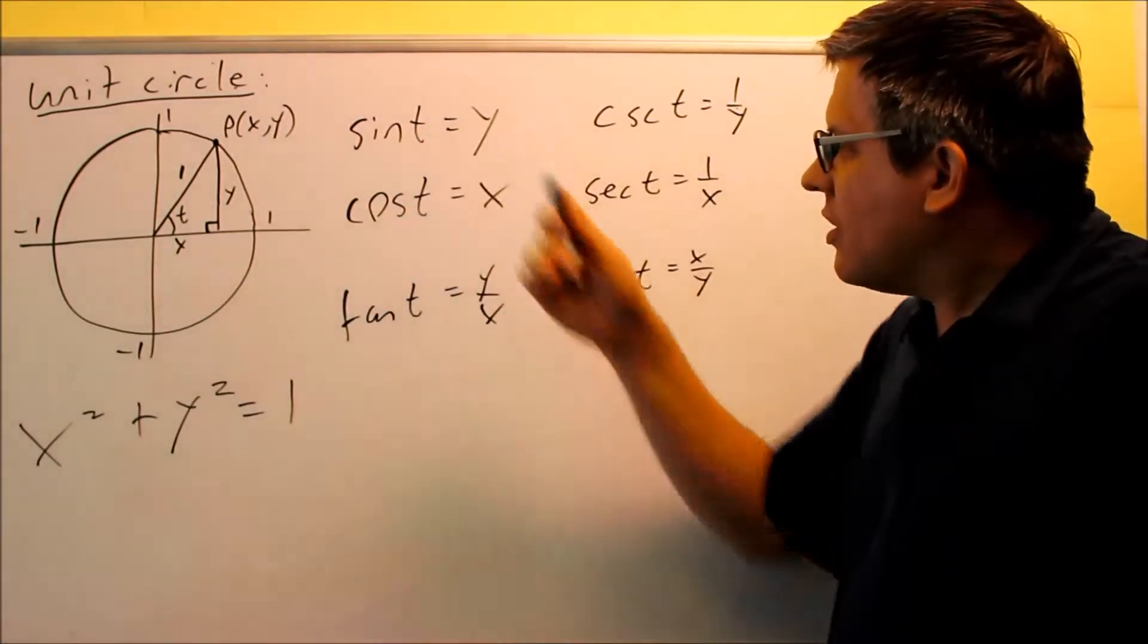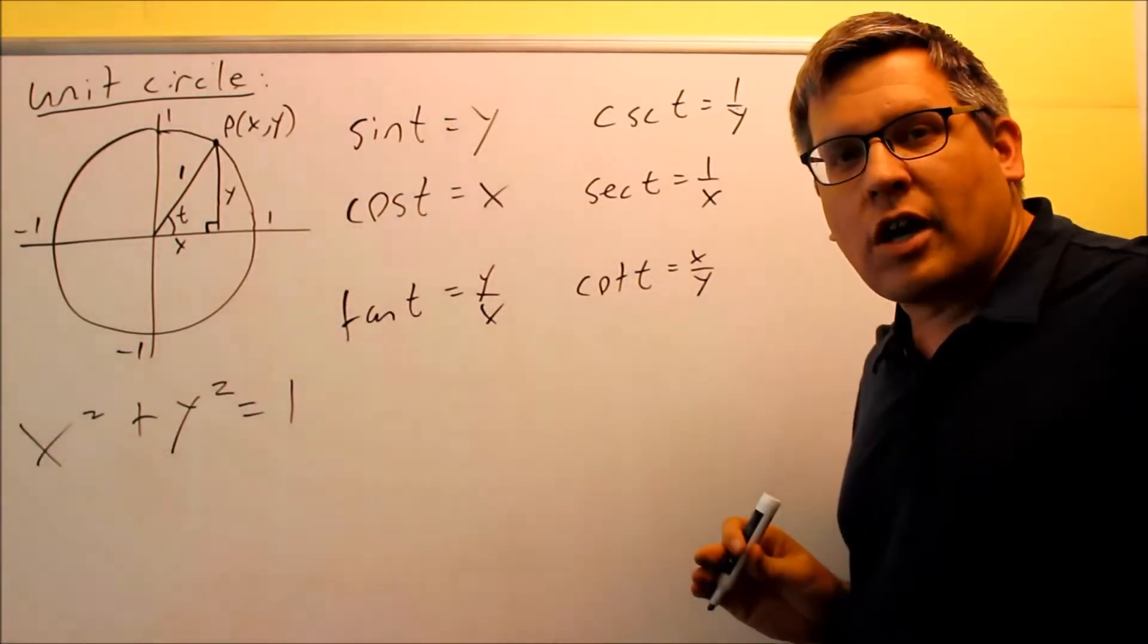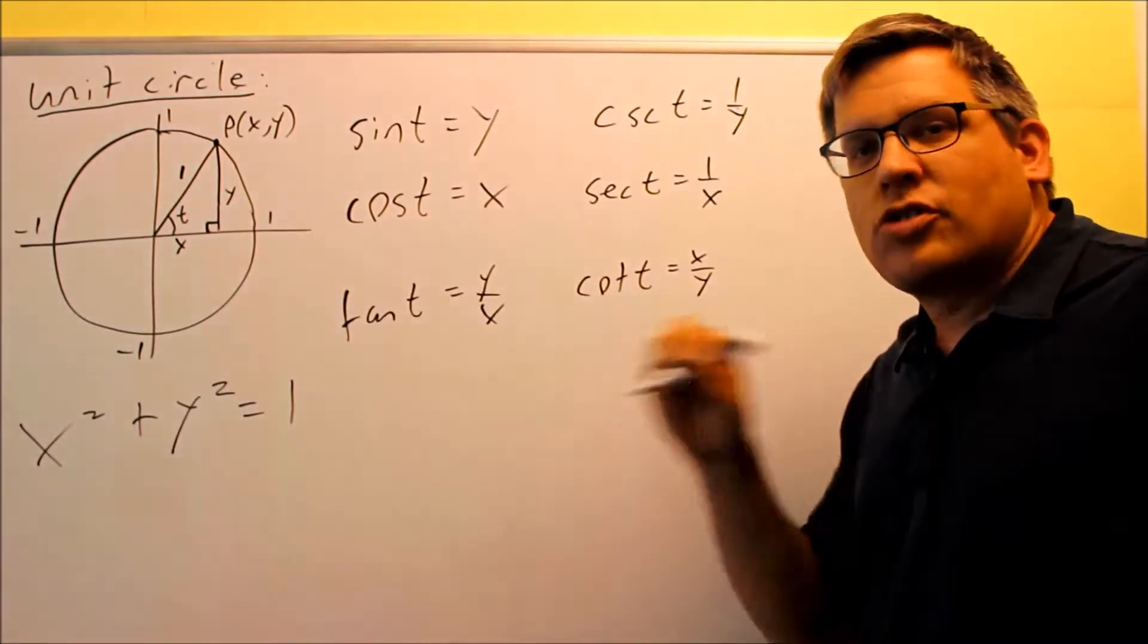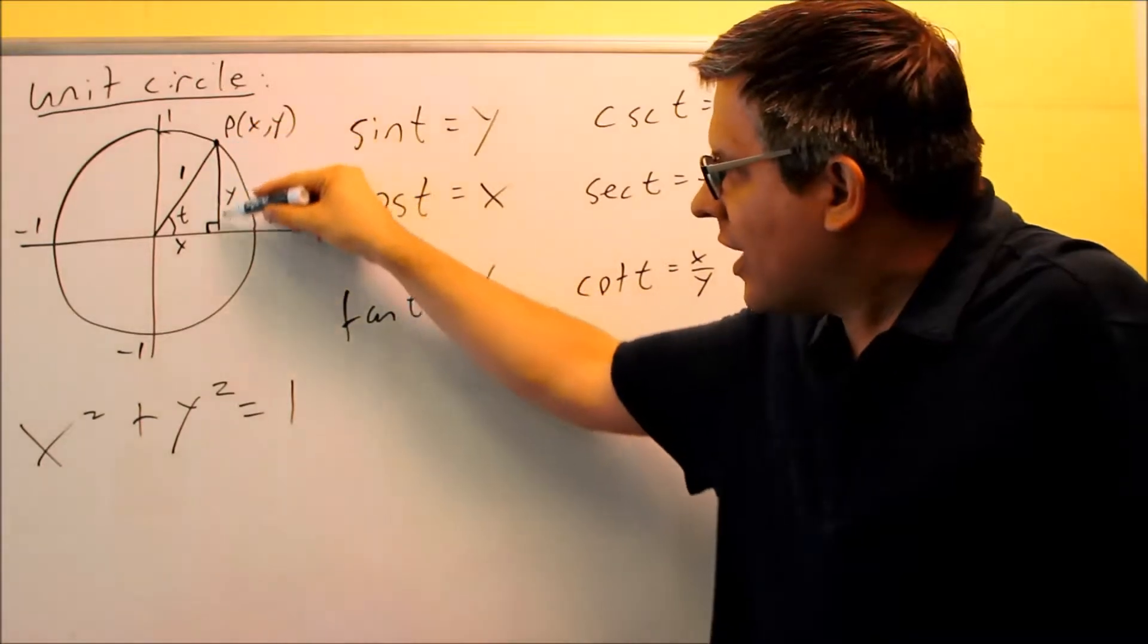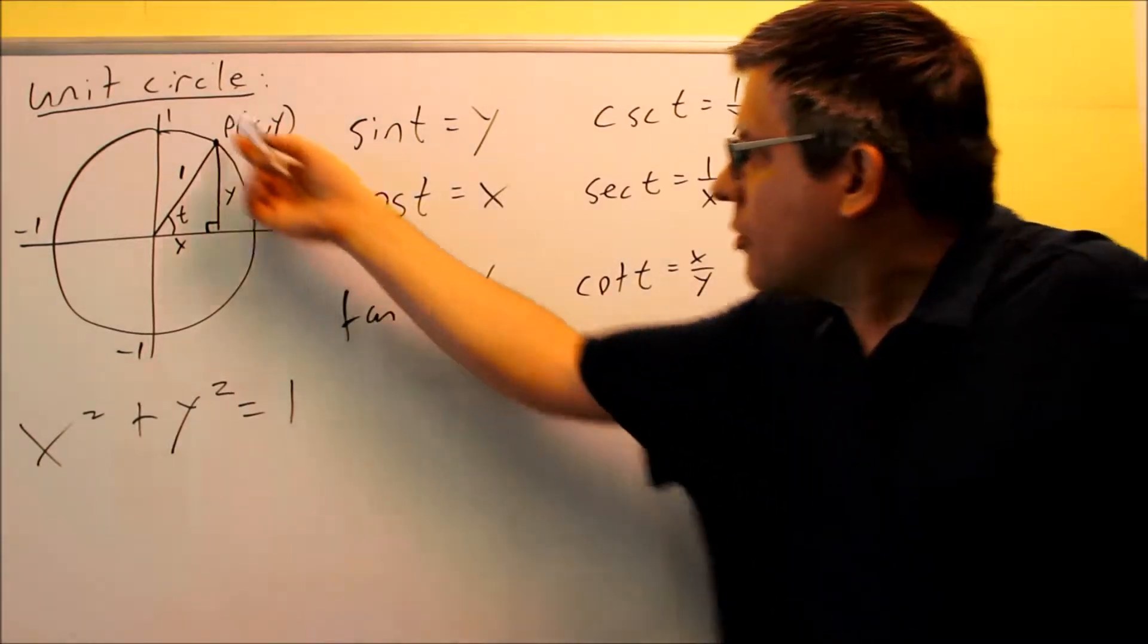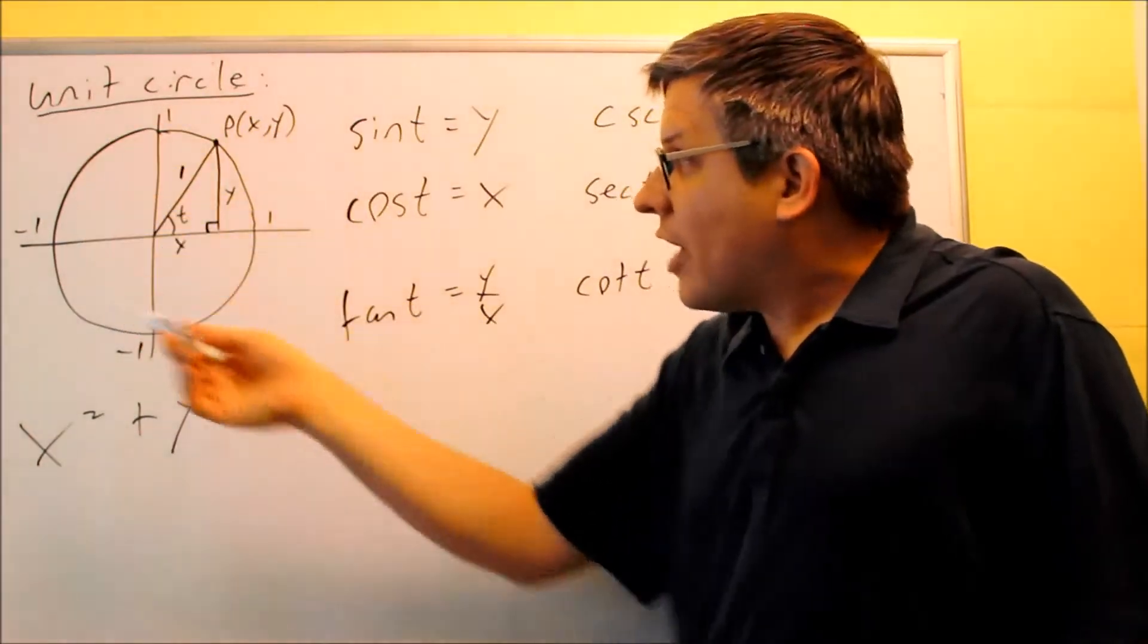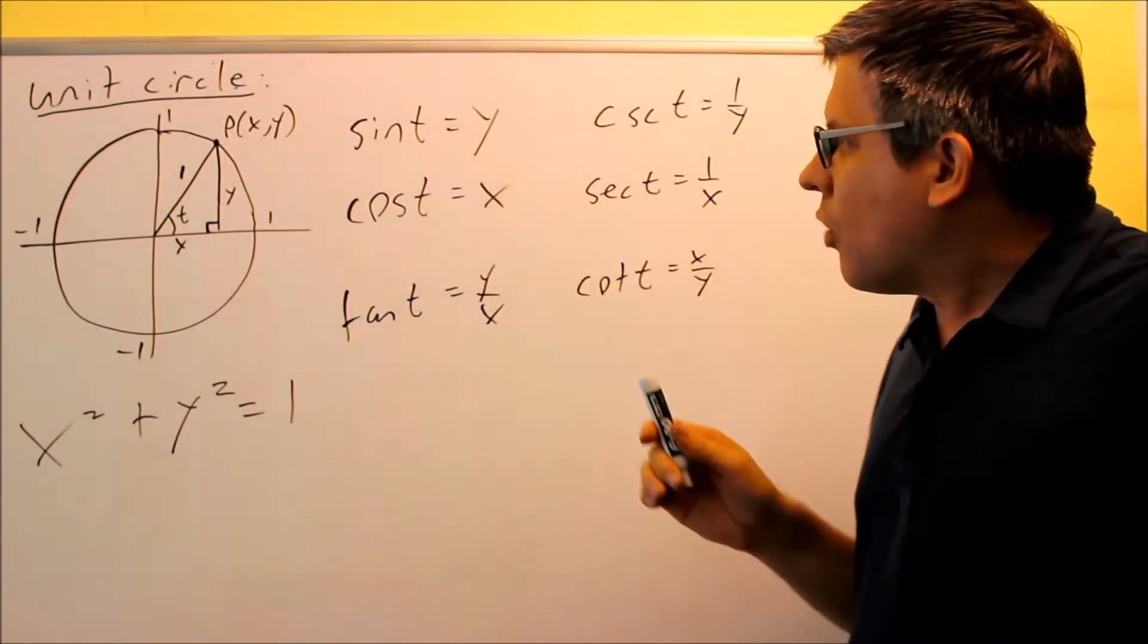Sine t is defined as y. Sine and cosine are functions that you have on your calculator. So if you put in whatever angle this happens to be, and you punch it into the calculator and hit the sine button, that will give you the actual height of that triangle right there. All the values that you get off your calculator come off of the unit circle.